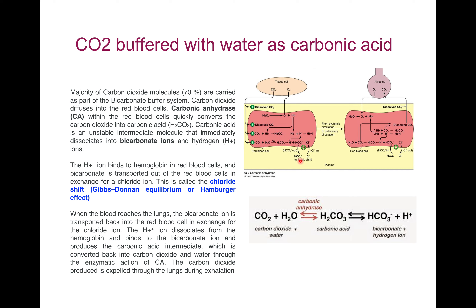In the blood plasma, bicarbonate ions combine with sodium ions to form sodium bicarbonate. But in order to maintain electrical neutrality, the same number of chloride ions diffuse into the RBC. This exchange of bicarbonate ions for chloride ions is called the chloride shift, also known as the Gibbs-Donnan Equilibrium or Hamburger Effect.